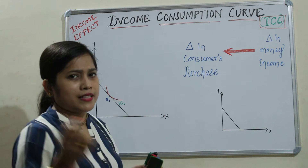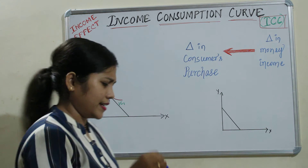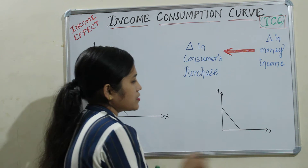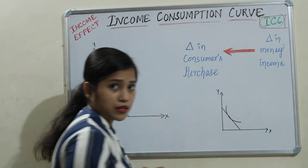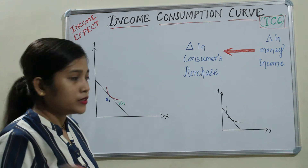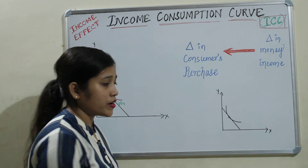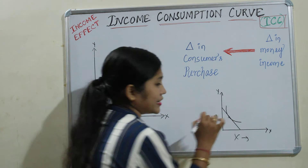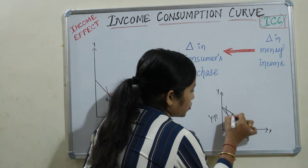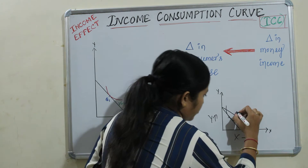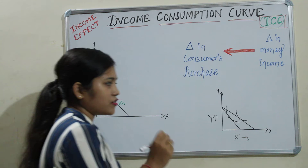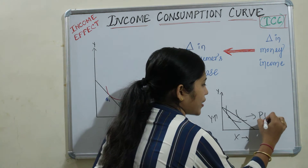Before moving to the concept, let's give a brief of the related concepts. This is the budget line, this is your indifference curve, and this is your equilibrium point — this we have already covered. When the price of one commodity, let's say X, increases or decreases, the budget line will rotate, and the position of the indifference curve also changes. This is generally due to an effect called the price effect.